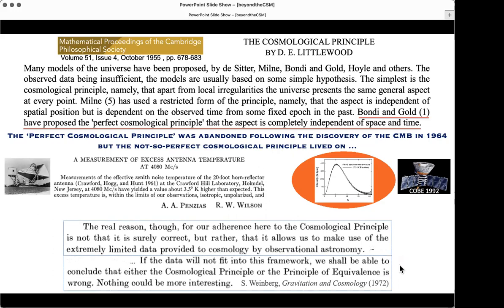Nevertheless, we clung on to the spatial cosmological principle, even though we abandoned the perfect cosmological principle. If you read Weinberg's classic textbook, which I learned cosmology and gravitation from, it says the real reason for our adherence to the cosmological principle is not that it is surely correct, but rather that it allows us to make use of the extremely limited data provided to cosmology by observational astronomy. Fair enough. You start with the simplest possibility. But Weinberg also went on to say, if the data will not fit into this framework, then we shall be able to draw some very fundamental conclusions that either the cosmological principle or the principle of equivalence is wrong. Nothing could be more interesting.